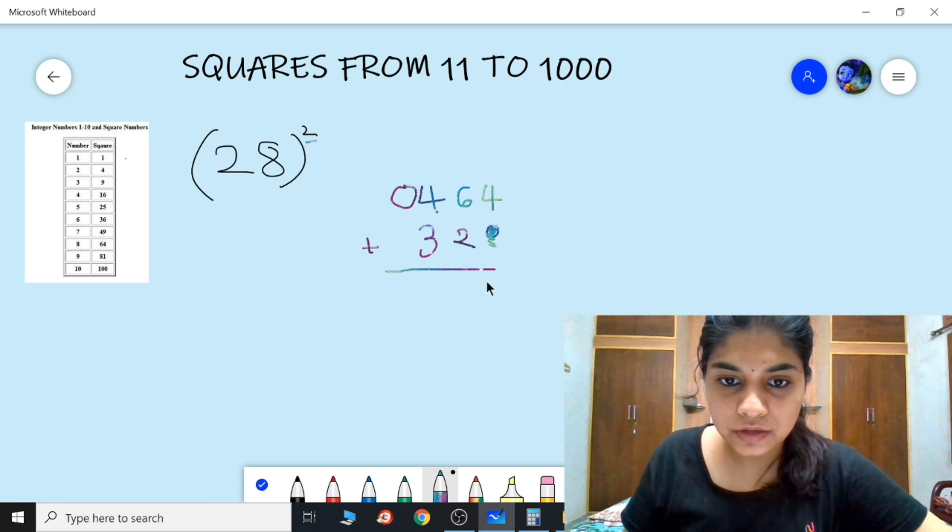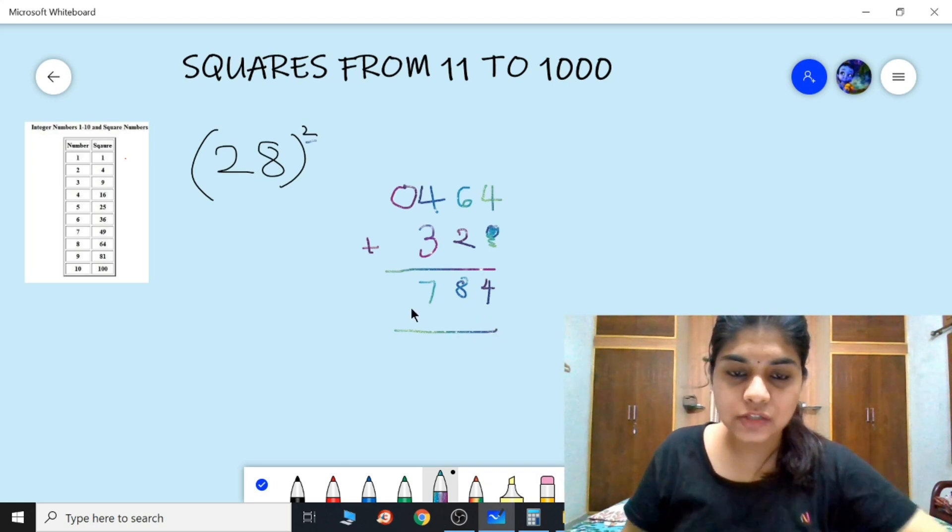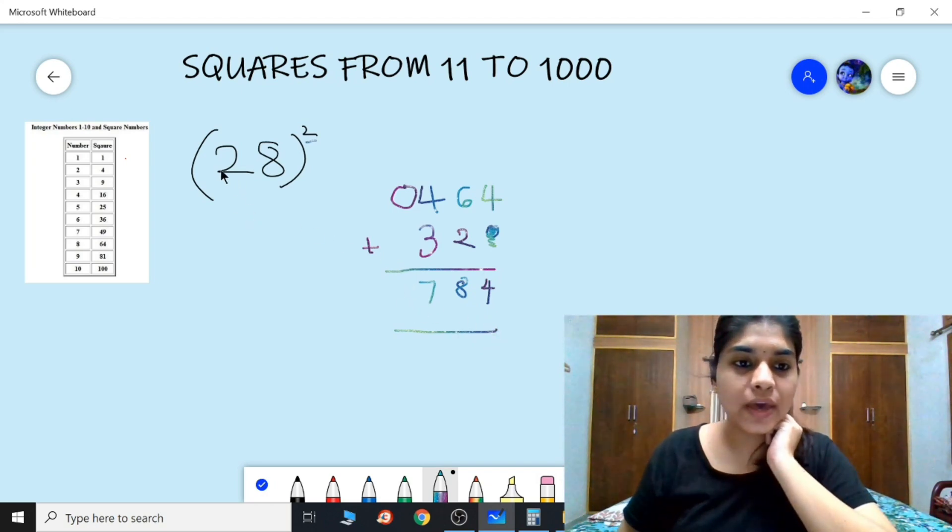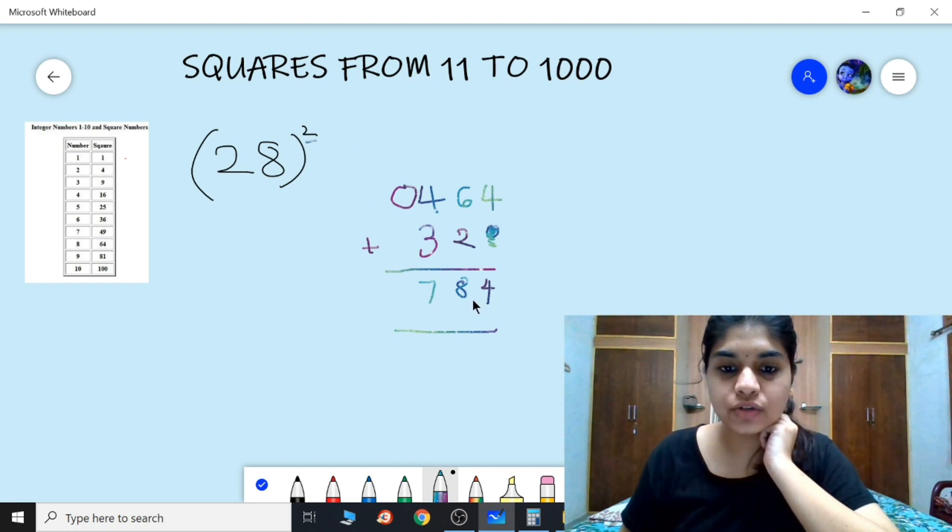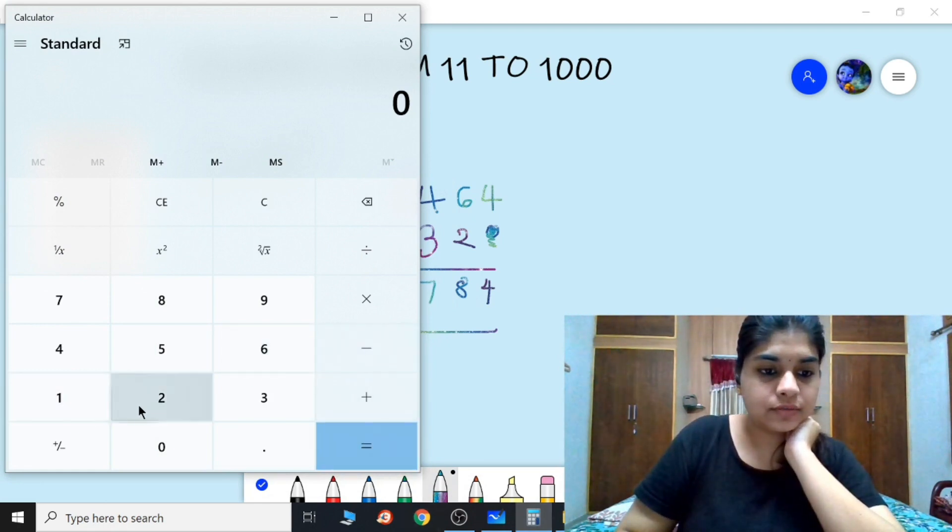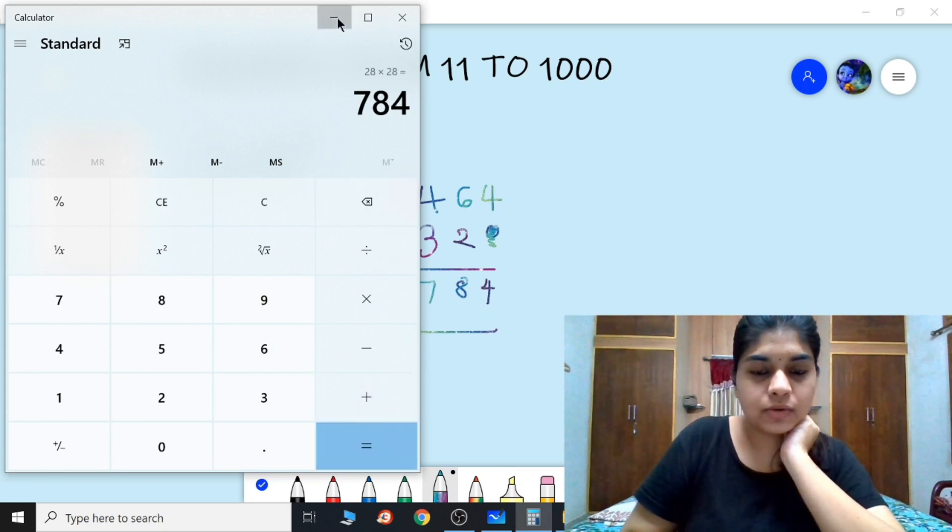Here we need to add this: 4, 8, 7. So the answer of 28 squared is 784. Let's check if this is correct. We have a calculator: 28 into 28 is 784, so that's what we've got.